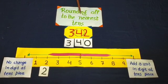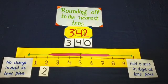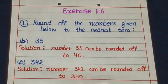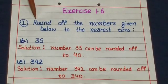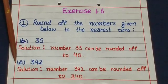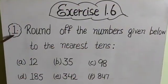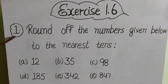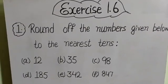Rounding off 342 to the nearest tens, it becomes 340. Dear students, write the first statement in your notebook like this and solve parts B and E. Remaining parts from statement one, do yourself in your notebook. Thank you.